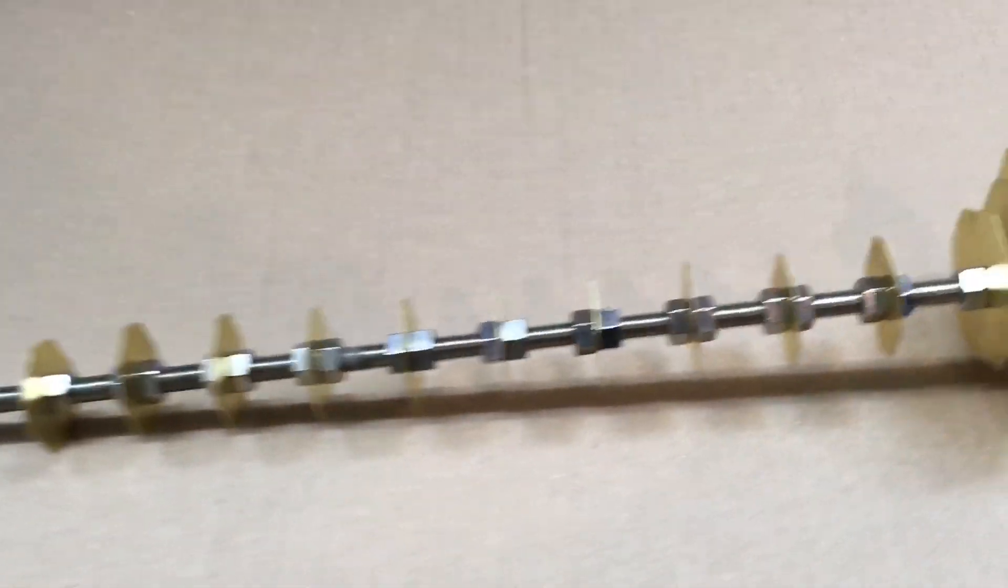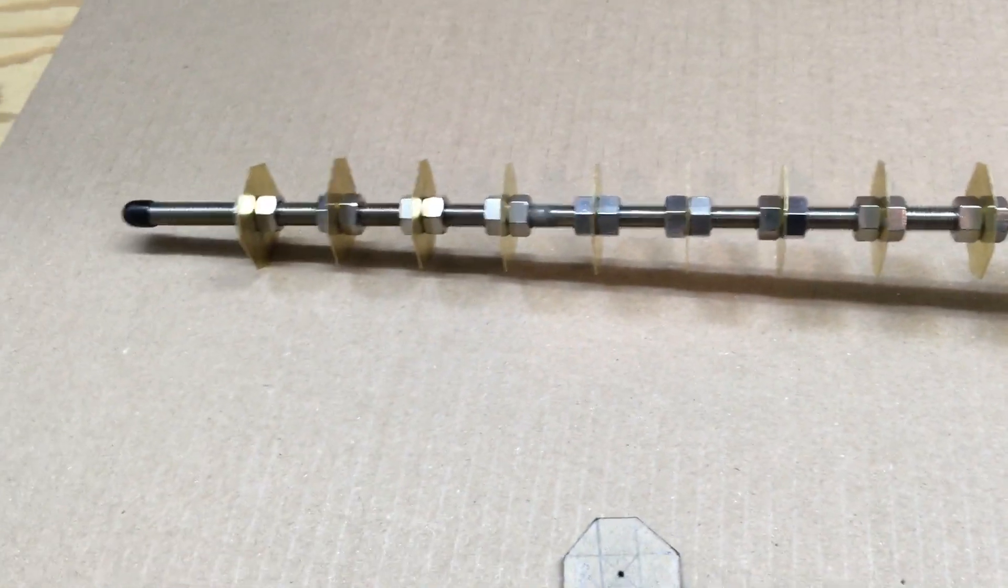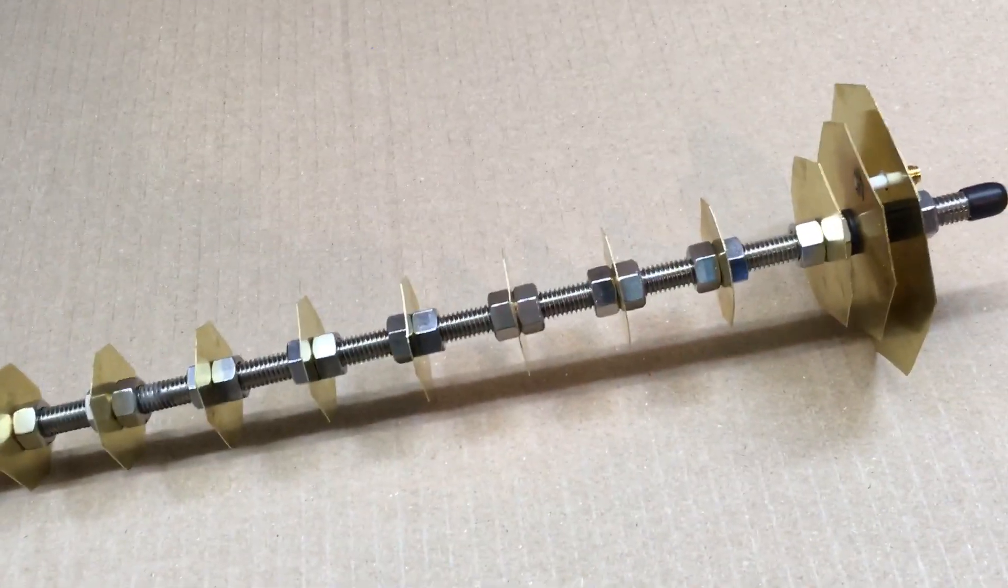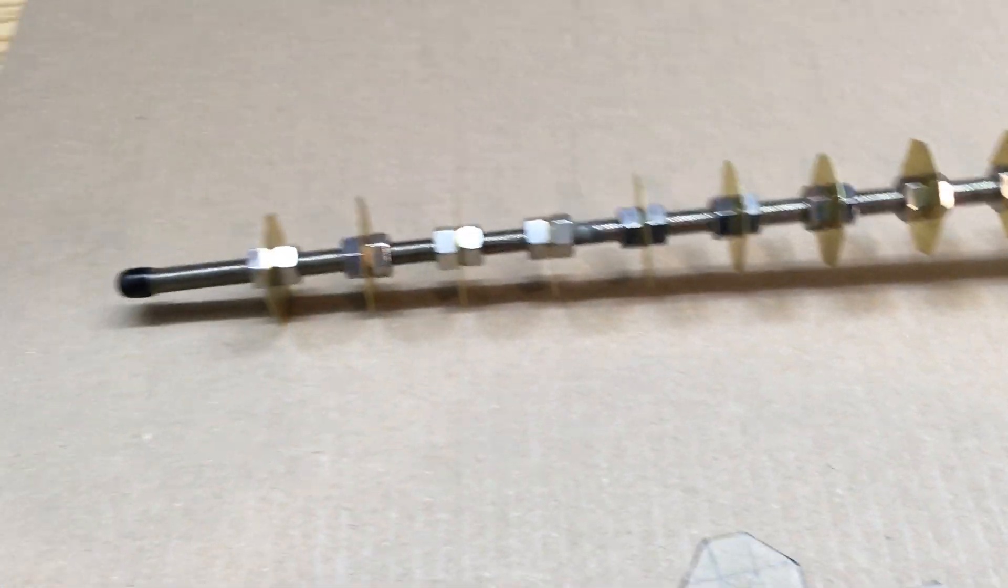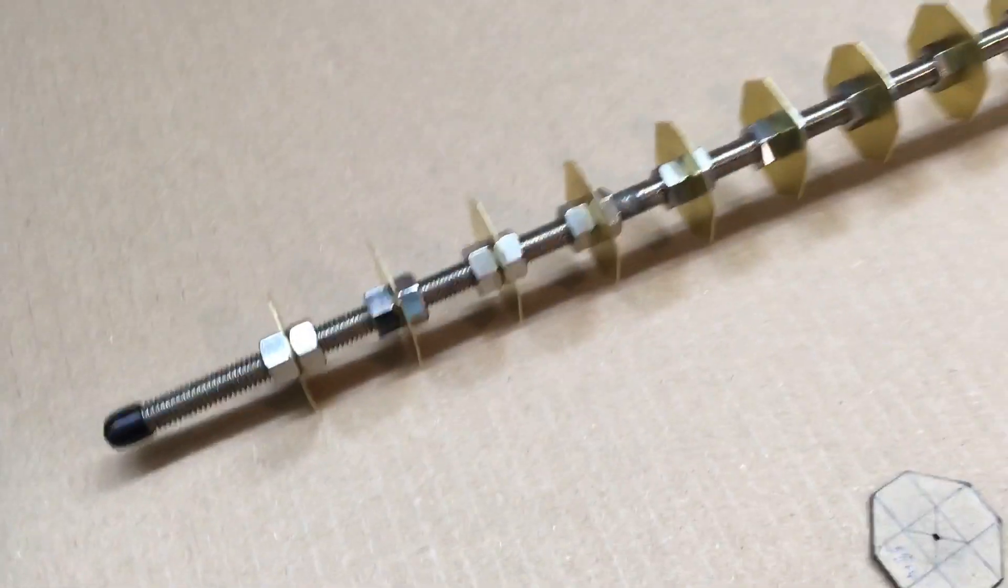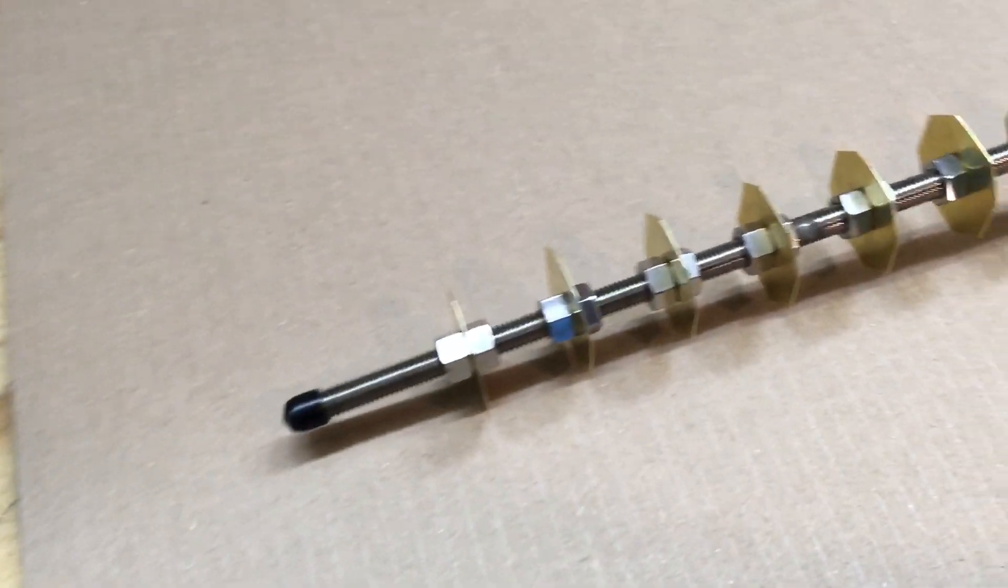Alright, Fuzz Pie Guy here. I finished up my 2.4 gigahertz Wi-Fi antenna gun, made out of a piece of all thread and brass sheet metal.